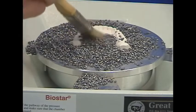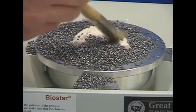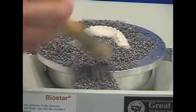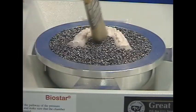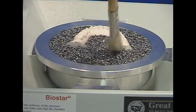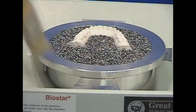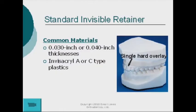Sweep excess pellets from the model. Pellets should contact the model 3 mm below gingival margins and extend to the rim of the pellet cup. The most common invisible retainer material is the Invisicryl A or C type of 0.030 or 0.040 inch thicknesses.